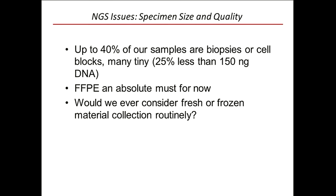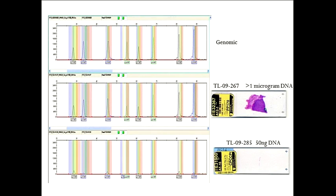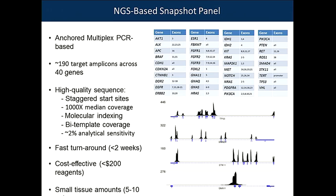Specimen size for solid tumors is a real issue. Forty percent of our samples are biopsies or cell blocks, and since we don't test everyone, we get largely metastatic disease. Twenty-five percent have less than 150 nanograms total of DNA in 10 five-micron sections. We found that about 20 percent of patients with metastatic disease — those we cared most about — didn't have sufficient material to be tested.